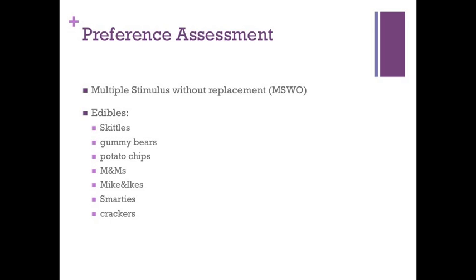At the beginning of each session, items were lined randomly on the table and the children were instructed to pick one. After a selection was made, all items except the selected one were represented in a randomized order and the children were again instructed to pick one. If a child did not pick an item during a trial after a 30-second period, items were represented again. If an item was not selected, the trial was marked as having no selection made. This procedure continued until there were no more trials to run.